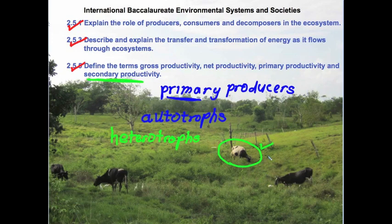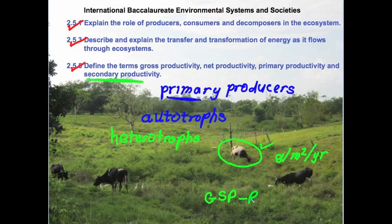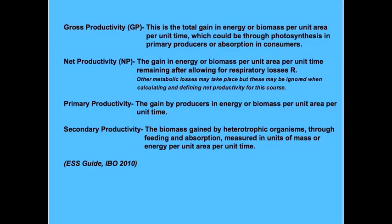So we've got secondary productivity and primary productivity. The secondary productivity of the cattle on the farm refers to the increase in biomass or the increase in energy per unit of area per unit of time. If we deducted from that gross secondary productivity the respiration, then we would get the net secondary productivity.